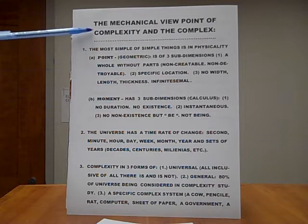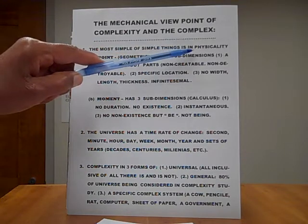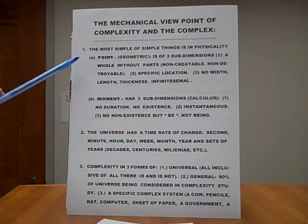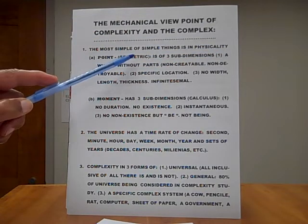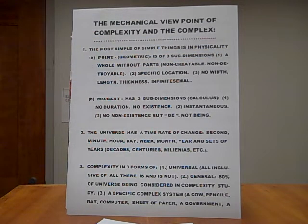Now, the mechanical viewpoint of complexity and the complex. Number one, the most simple of simple things is in physicality. Number A, point, geometric. Is of three sub-dimensions. Number one, a whole without parts. Non-creatable, non-destroyable. Number two, specific location. Number three, no width, length, thickness, infinitesimal.